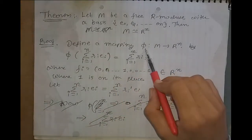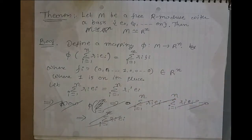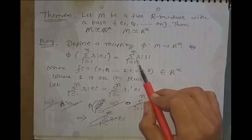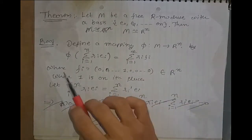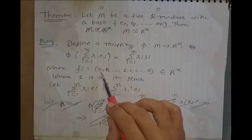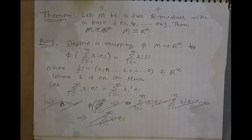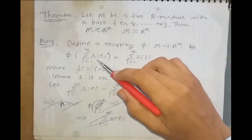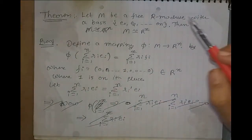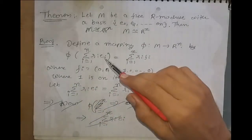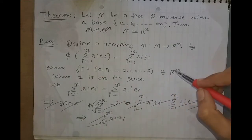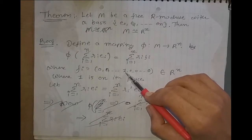Define a mapping φ from M to R^n by: φ(Σ Ri·Ei) = Σ Ri·Fi, where i runs from 1 to n, and Fi is the n-tuple (0, 0, …, 1, …, 0) in R^n with 1 in the i-th place. So the map φ sends each element of M, written as a linear combination Σ Ri·Ei, to the corresponding tuple Σ Ri·Fi in R^n.